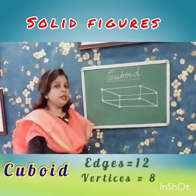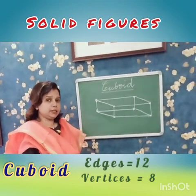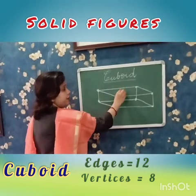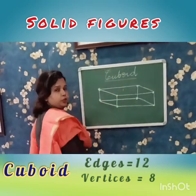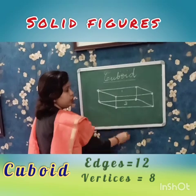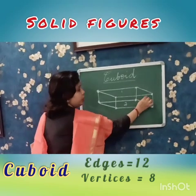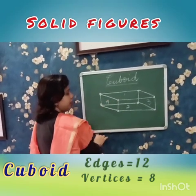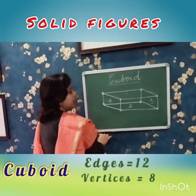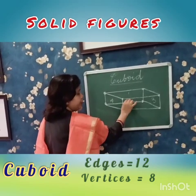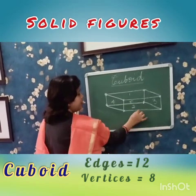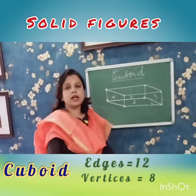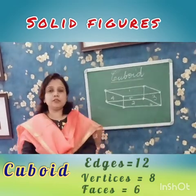How many faces does a cuboid have? 1 face at the top, then 2 at the bottom, left 3, right 4, then at the back you will get 1 face — 5, and 1 face in the front — 6. It has 6 faces.